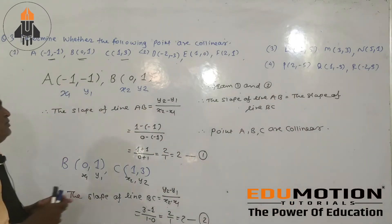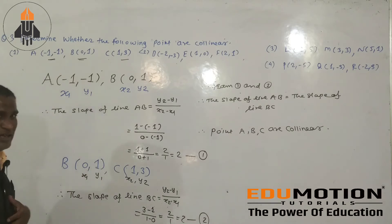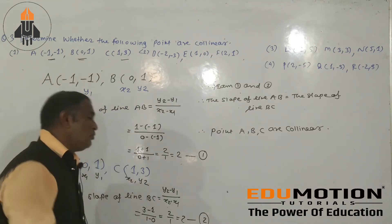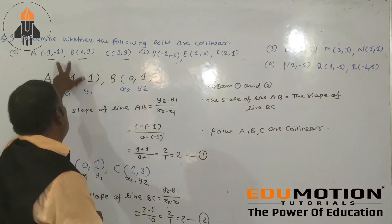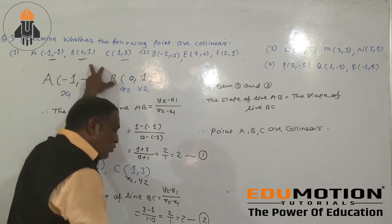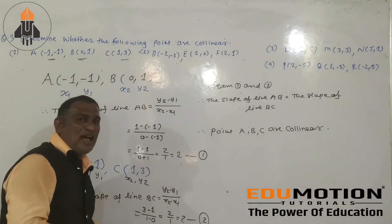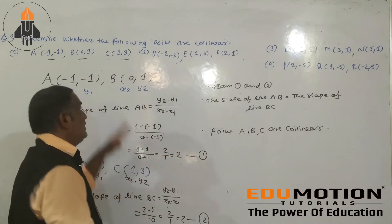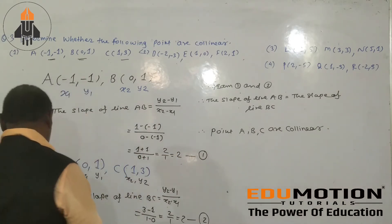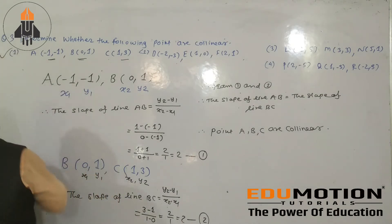So the method is: three points are given. Find the slope of the first pair of points, then find the slope of the second pair of points. If the slopes are equal, then these points are collinear. That is your first problem solved. Now move to the next question.